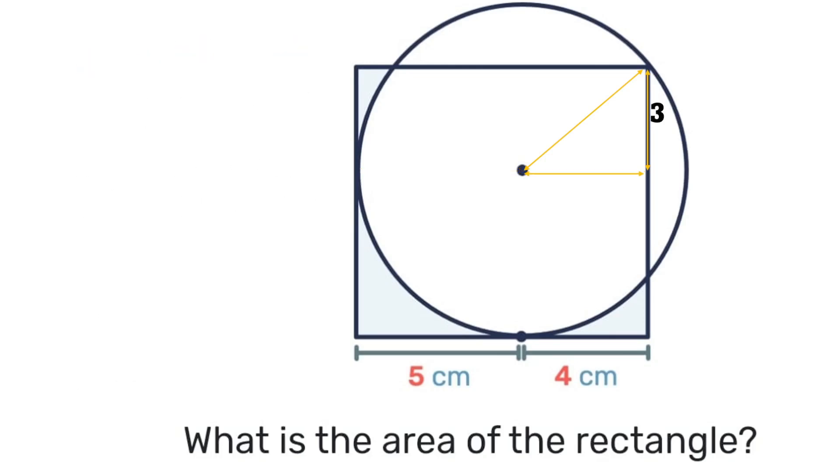So if that is 3, again we need to use the fact that the radius of a circle is the distance from the center to any point on the circumference. This distance is also 5, and we can translate that to the right, which will also be 5.